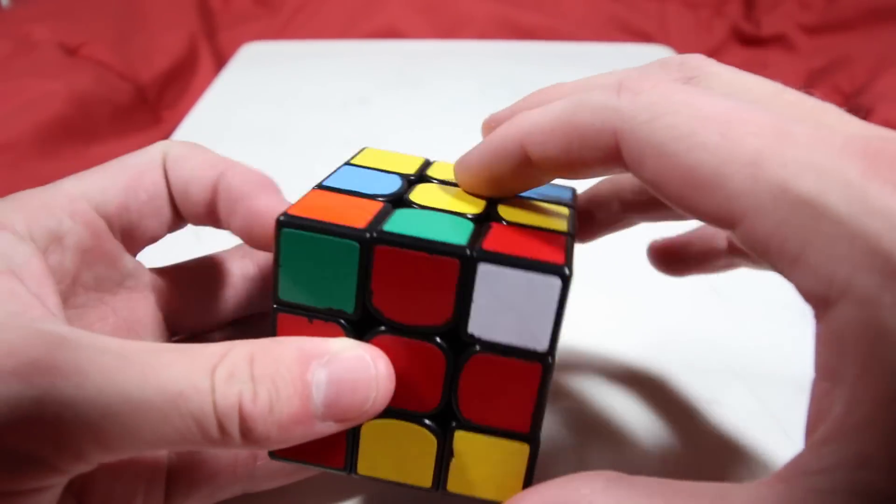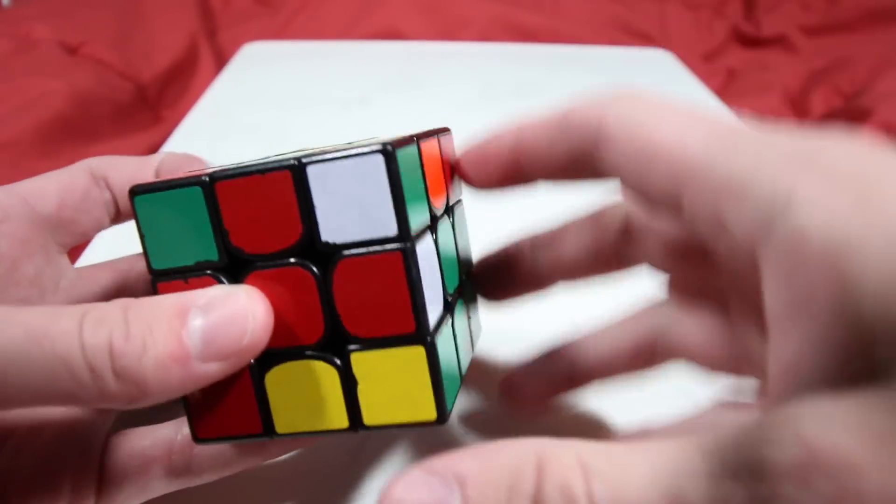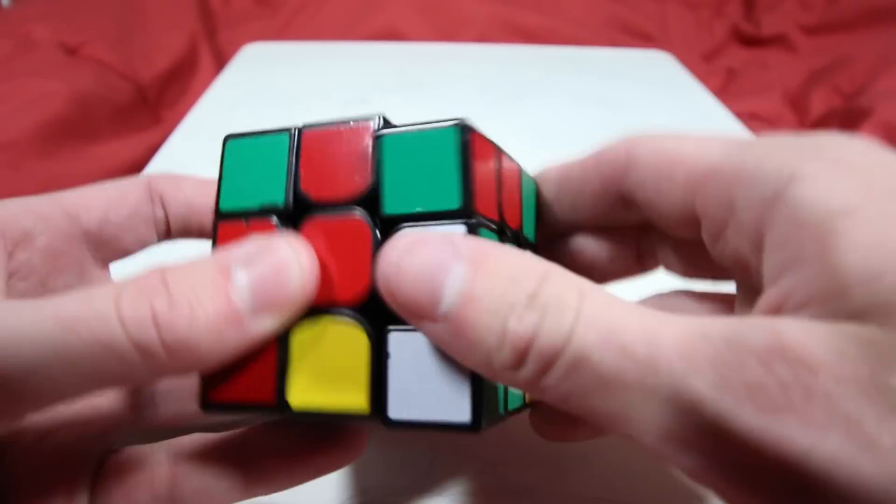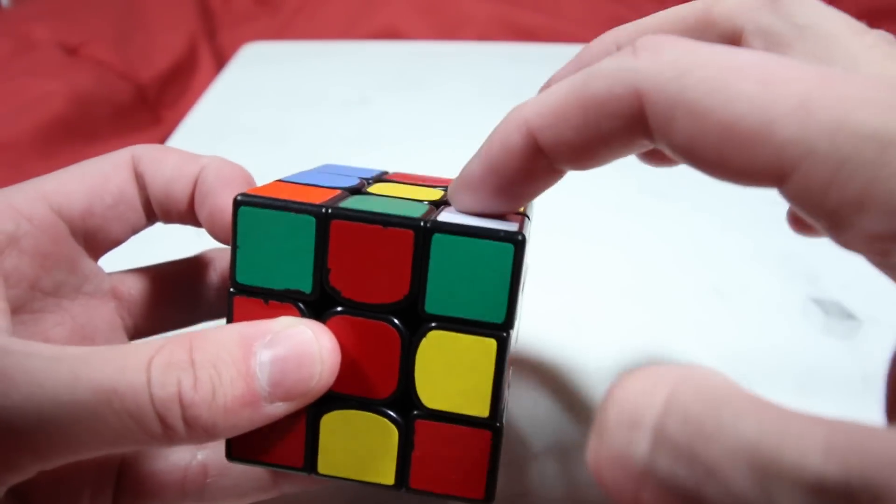Now that pair won't always be formed right away, so what you can do is just keep inserting that corner back into the D layer and then keep pairing it up with the edge, and eventually it will rotate the corner enough times that you create that pair and you can insert it like normal.